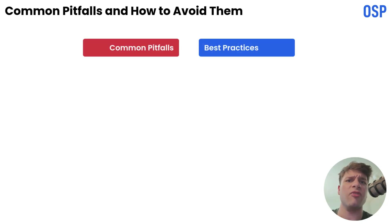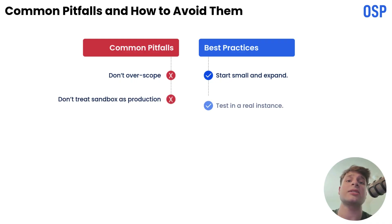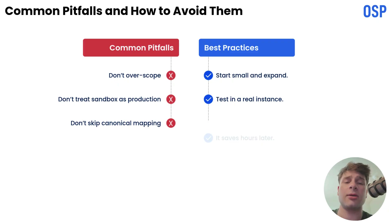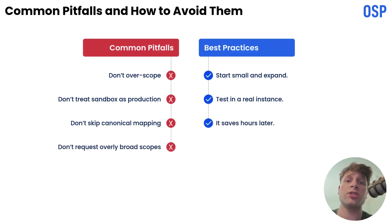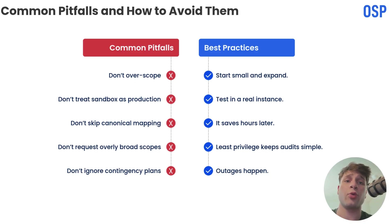Here are some common pitfalls and how to avoid them. Don't overscope — start small and expand. Don't assume sandbox equals production — test in a real instance. Don't skip canonical mapping — it saves hours later. Don't request overly broad scopes — least privilege keeps audits simple. Don't ignore contingency plans — outages happen. Watch for these and you'll avoid most of the common rework and delays.